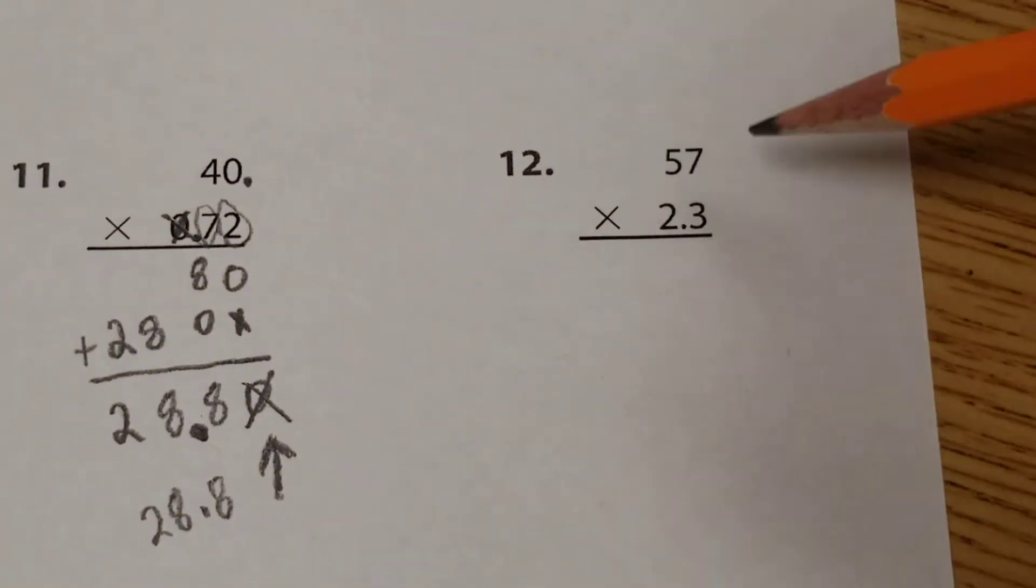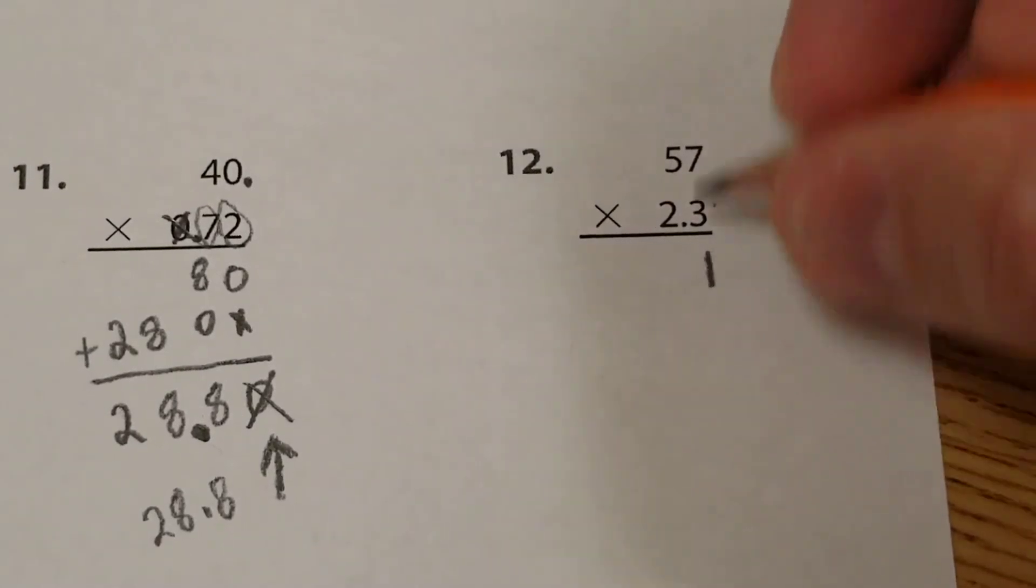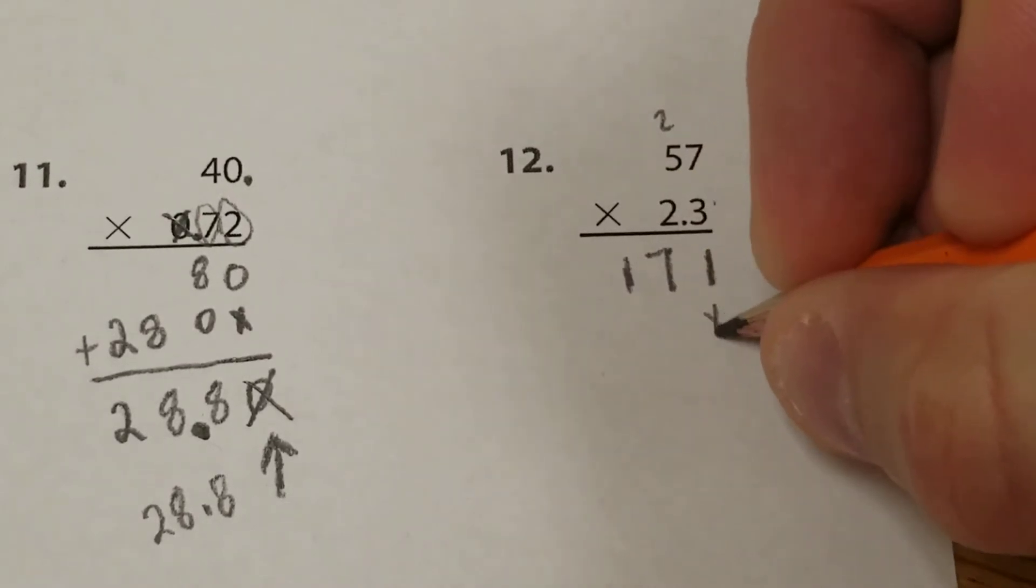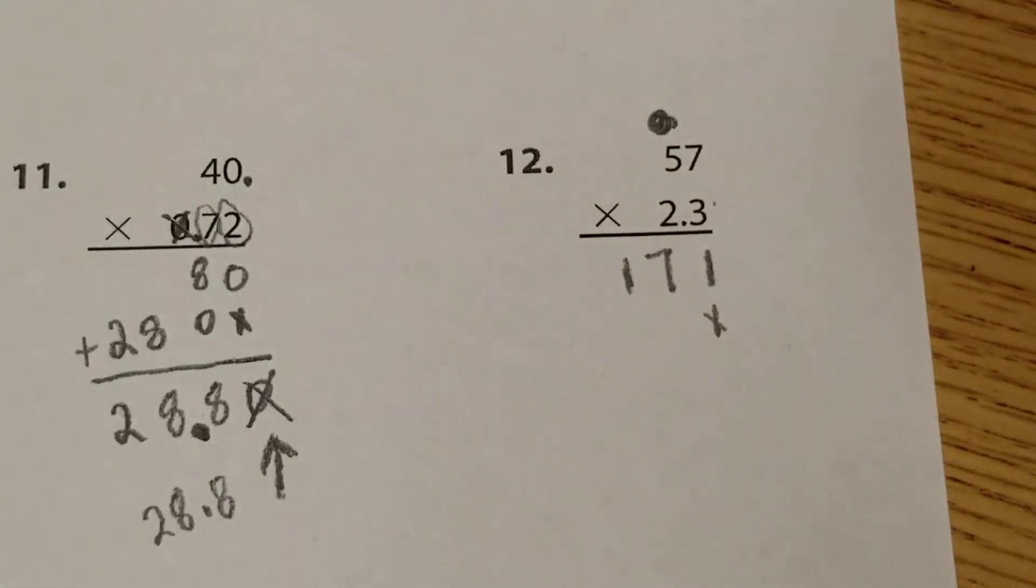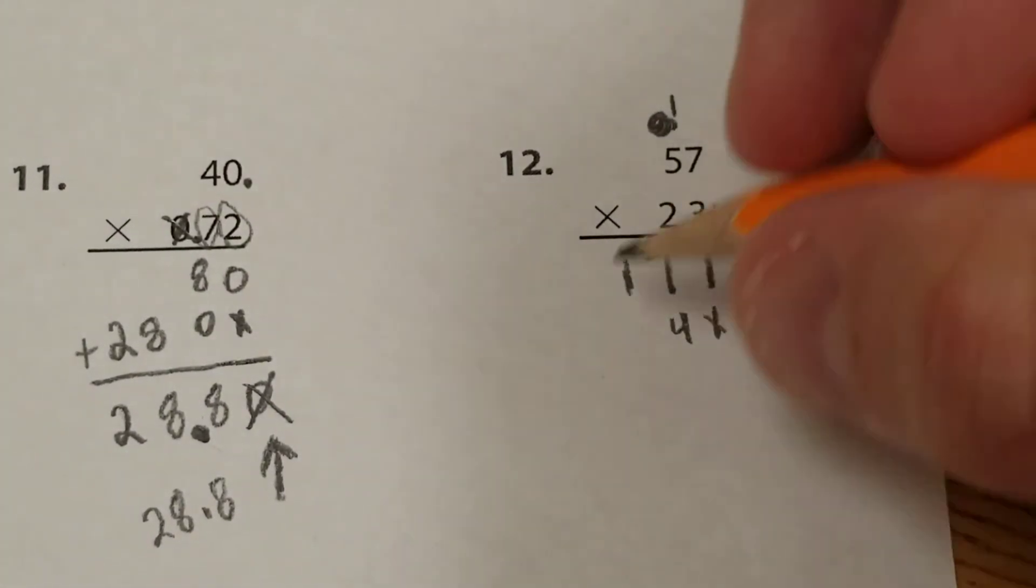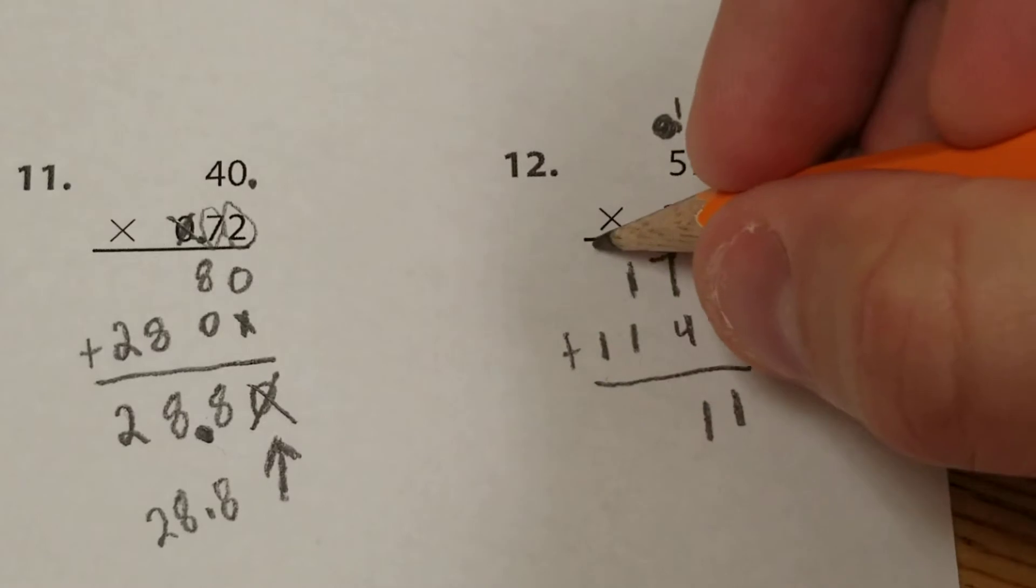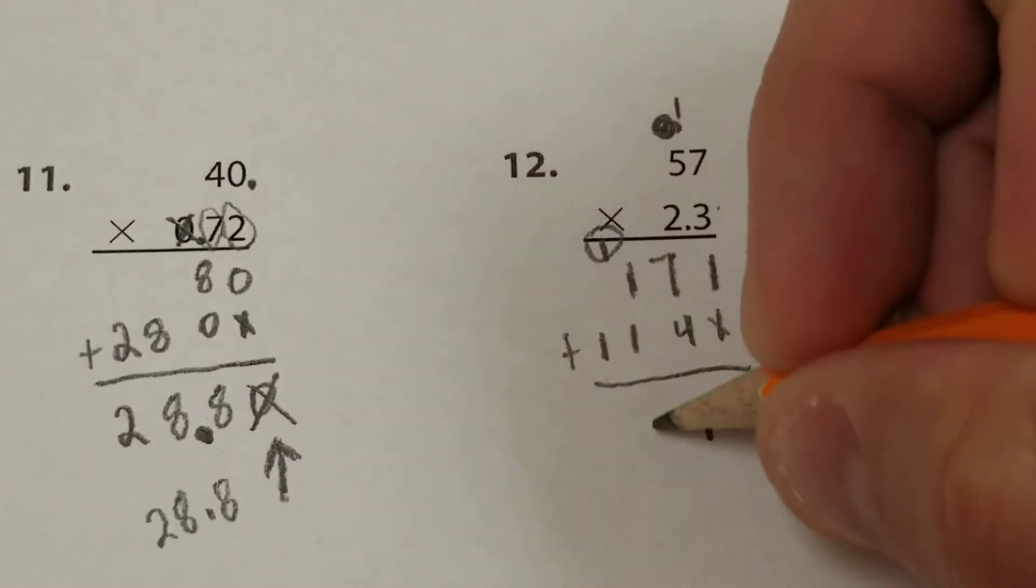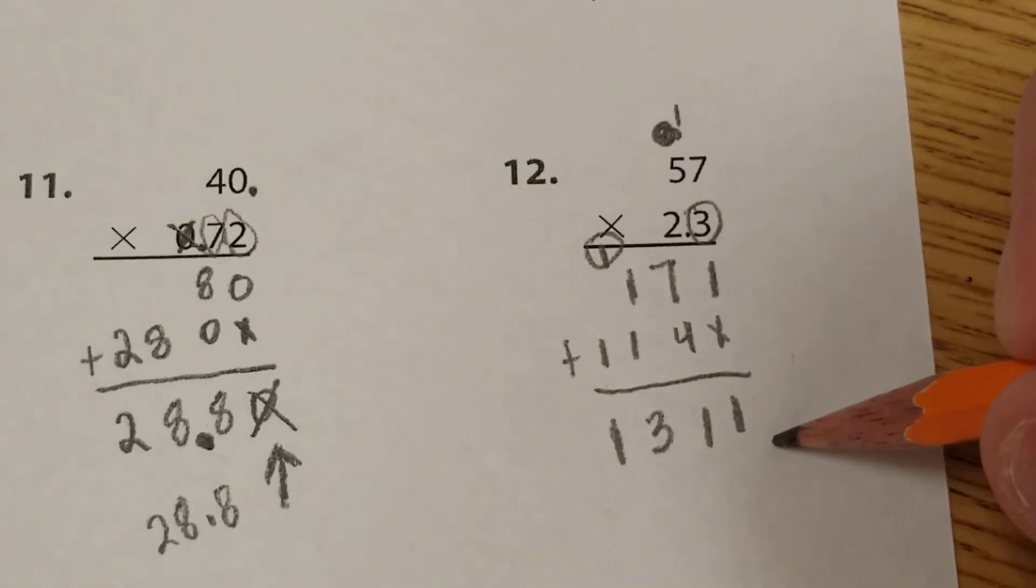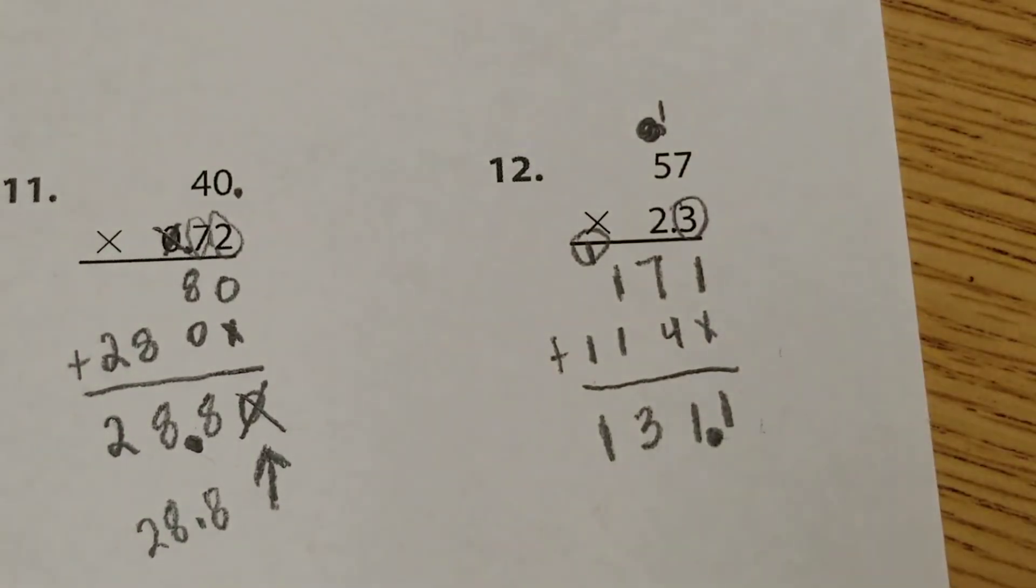Last one, 57 times 2.3. 3 times 7 is 21. 5 times 3 is 15 plus 2 is 17. I put in my placeholder. Get rid of that regroup, I've already used it. 2 times 7 is 14. 2 times 5 is 10 plus 1 is 11. We're just going to add these: 1, 7 plus 4 is 11, regroup my 1. 1, 1, 1 is 3 and 1. Check my decimals. I have one spot. I go to the end. I move it to the left one spot. Our answer is 131.1.